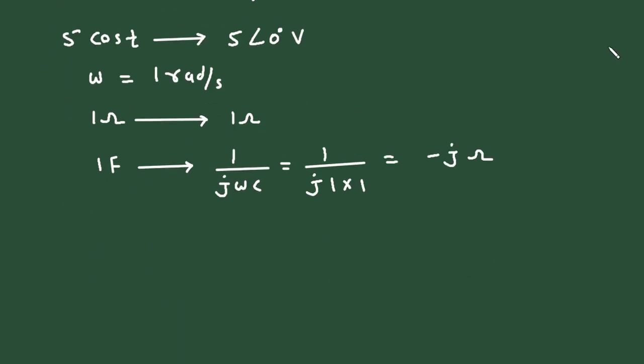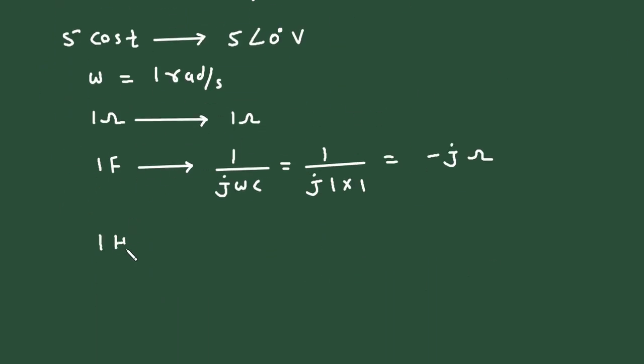Then this 1 henry will become j omega L. So j into omega value is 1 into inductance value is also 1. So this will be j ohm.